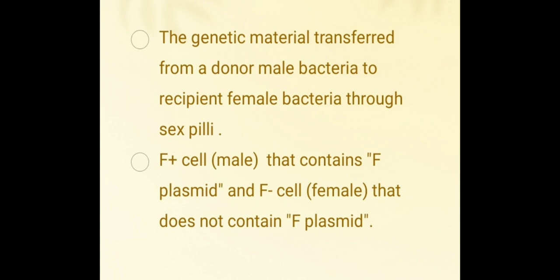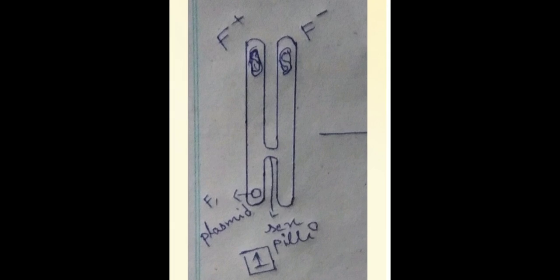Bacteria that contain F plasmid are known as F+ or donor male cells. Bacteria that don't contain F plasmid are known as F- or recipient female cells. The F factor, or fertility factor, has a special characteristic: the sex pili.